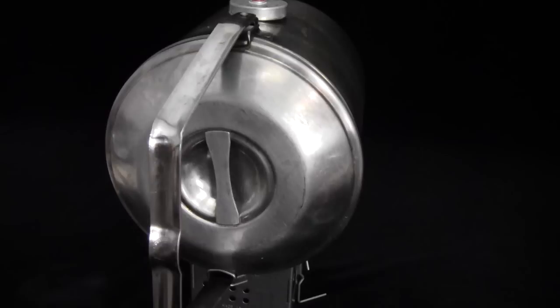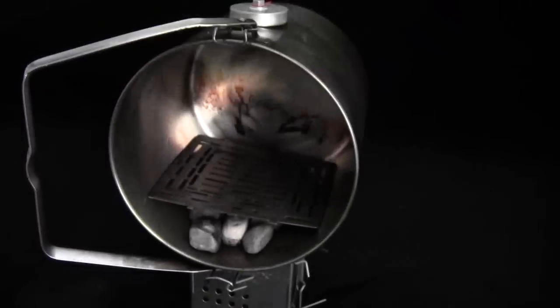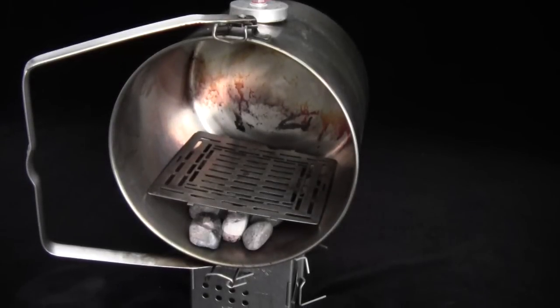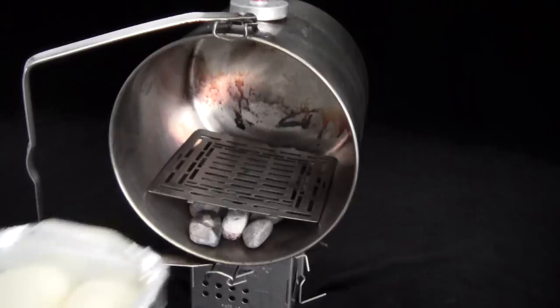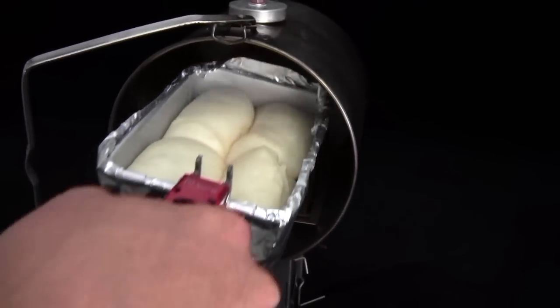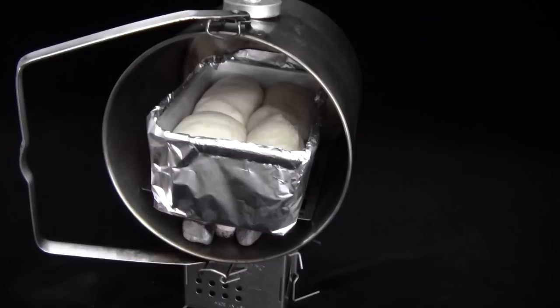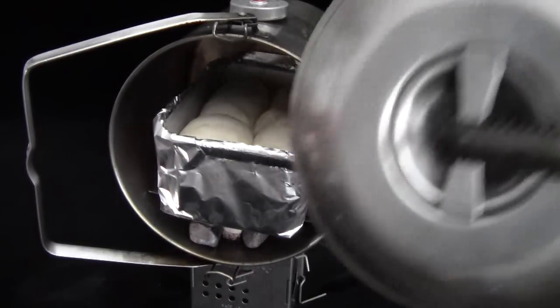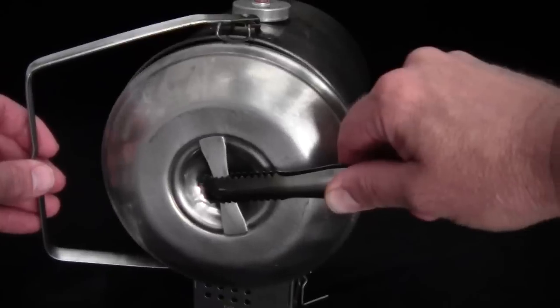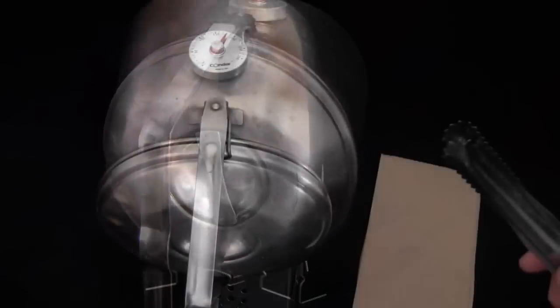My oven has preheated now, so I'm going to go ahead and open it up and put my rolls in. You can see they've risen a little bit more. I think that this is going to be the winning combination and they're going to turn out great. I'll put those in, close my oven door, and I'll set my timer.